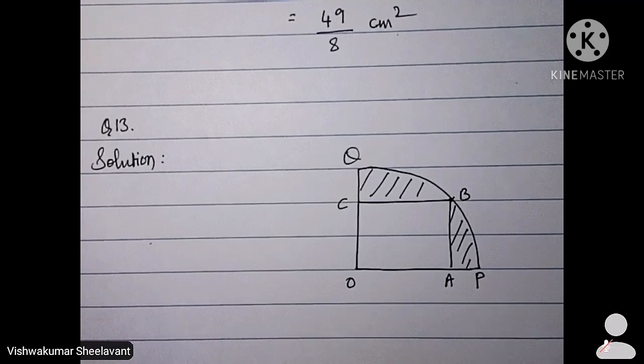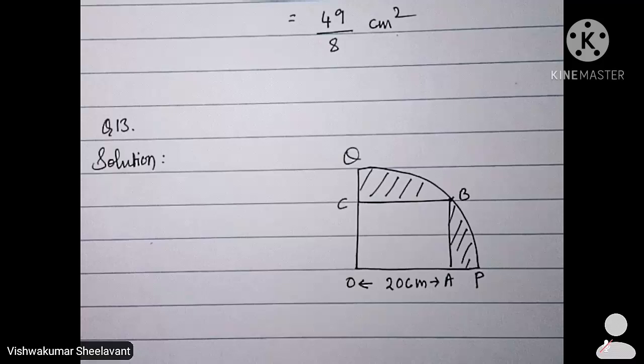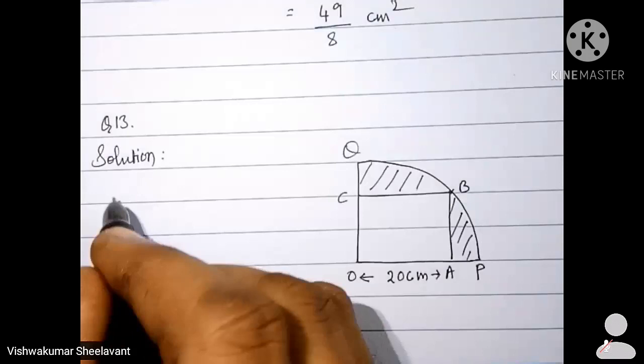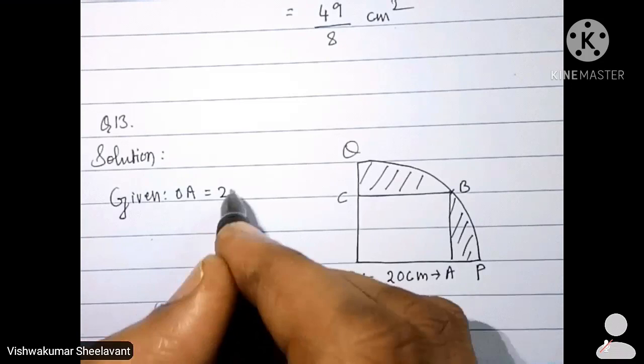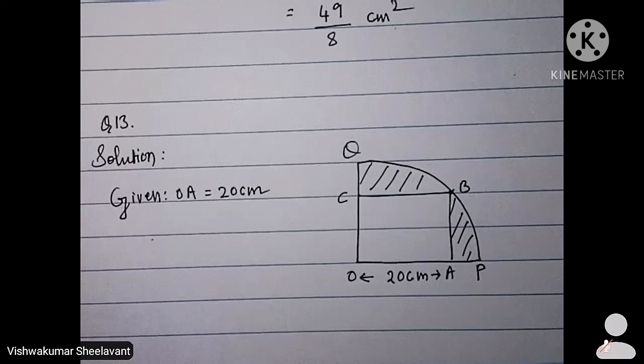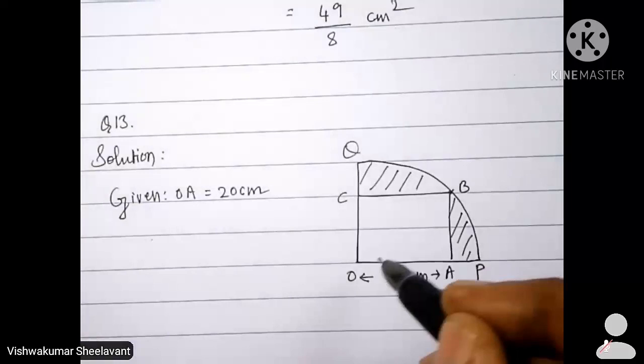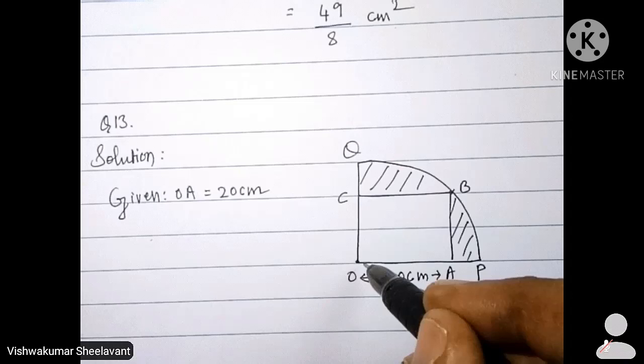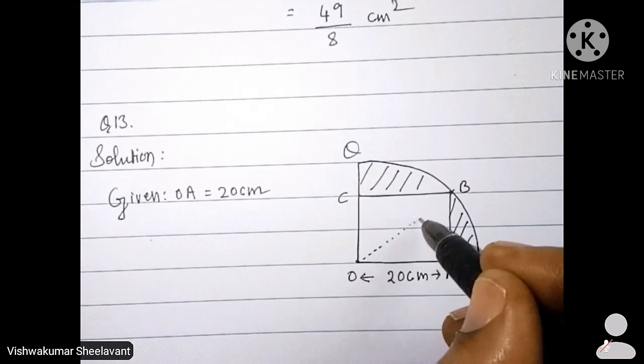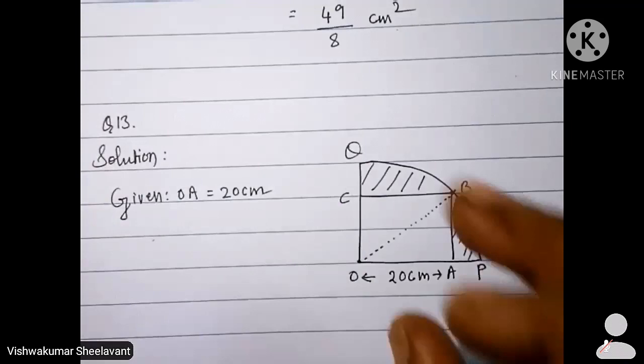Square OA is given as 20 cm. So write given OA equal to 20 cm. How do you find radius of this quadrant now? If you measure the distance between center of the circle and any point on the circle, distance remains the same. So OP equal to OQ equal to OB.